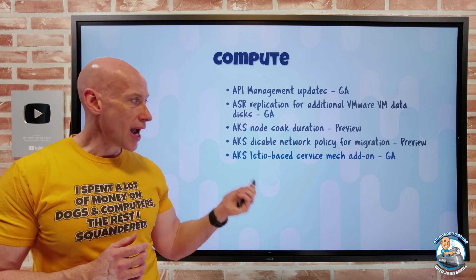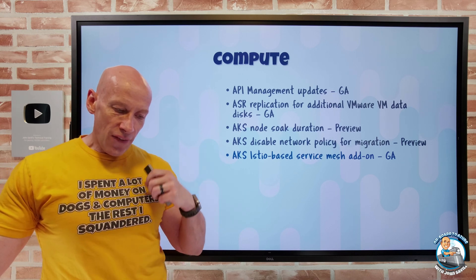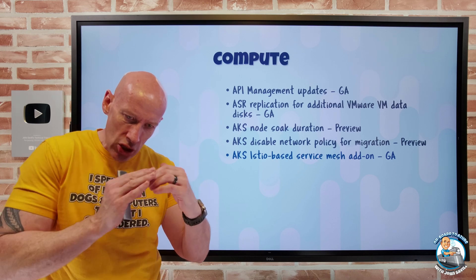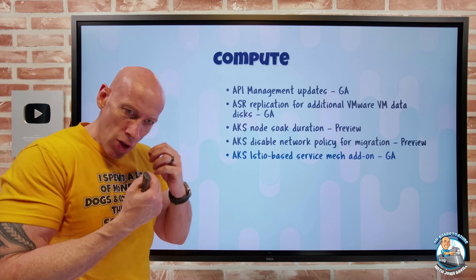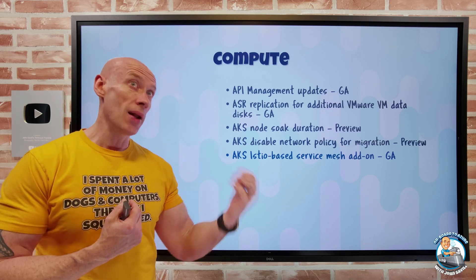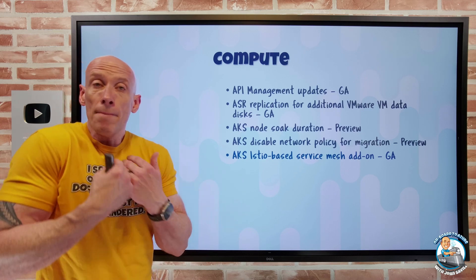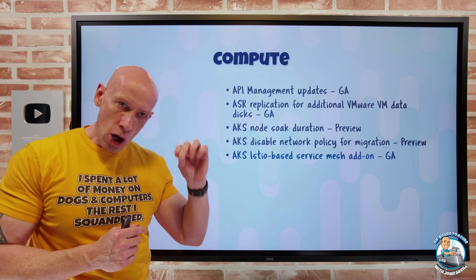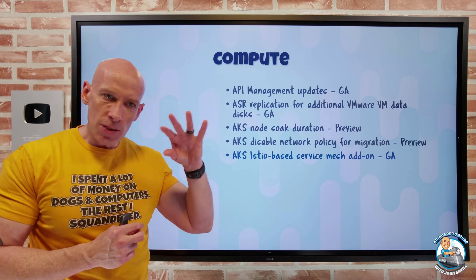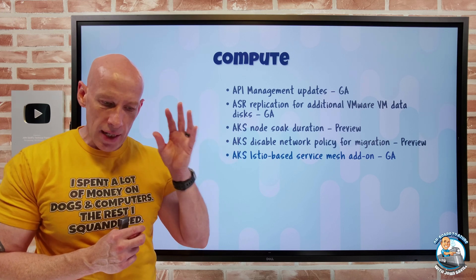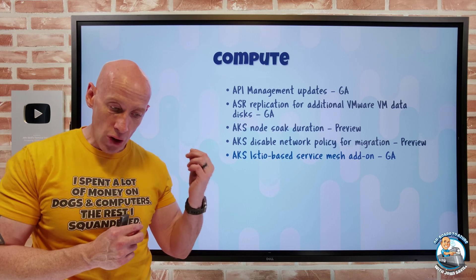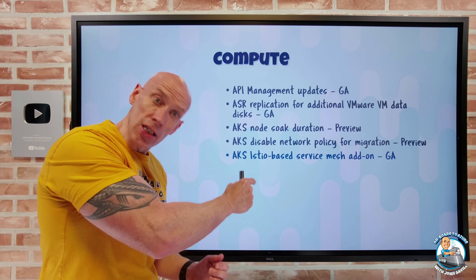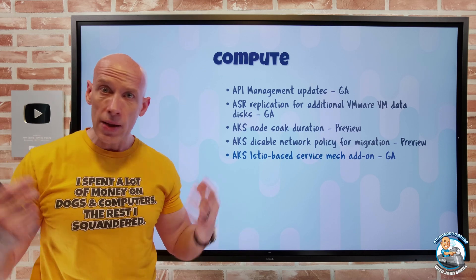AKS Istio-based service mesh add-on has gone GA. This is an officially supported and tested integration for AKS. A service mesh is a dedicated infrastructure layer added to your application that transparently adds capabilities for workloads in your pods — like observability, traffic management, and security — without any code changes. They took the open source Istio and did testing specifically for AKS, ensuring compatibility across supported AKS versions, minor patch version upgrades, plug-in certificate authorities, managed external and internal ingress, and scaling of the Istio control plane components.